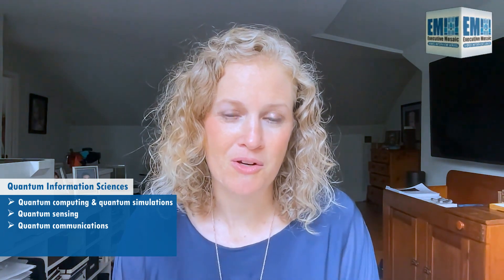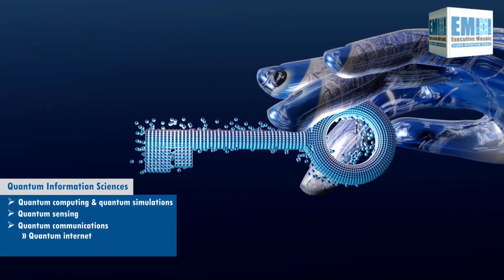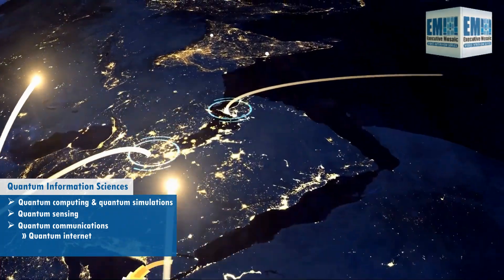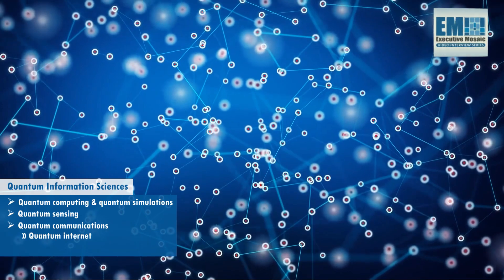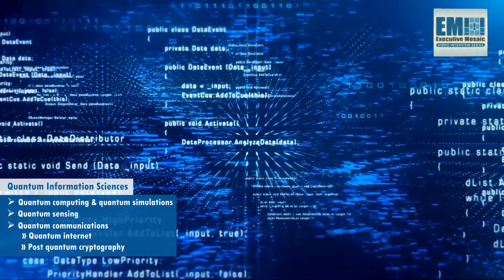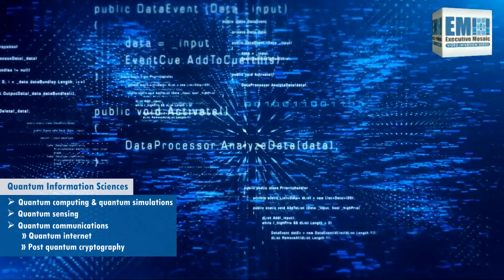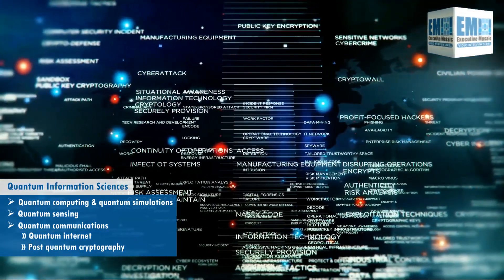The last area is quantum communications and quantum secure communications in particular. There are two different types: one is the quantum internet — quantum key distribution, which is being able to send information in a quantum state from one node to another. The other is preparing to prevent attacks from quantum computers, called post-quantum cryptography, which enables a different type of cryptography that allows us to protect from things like store-now, decrypt-later attacks from our adversaries.